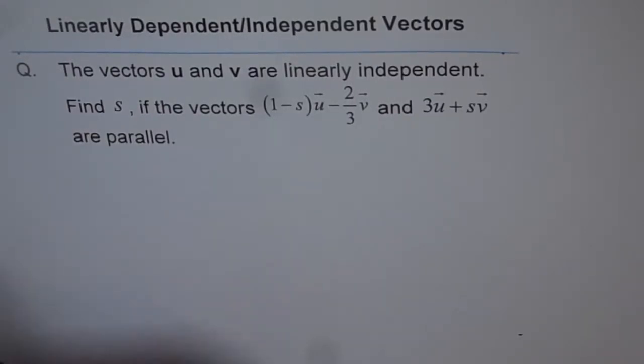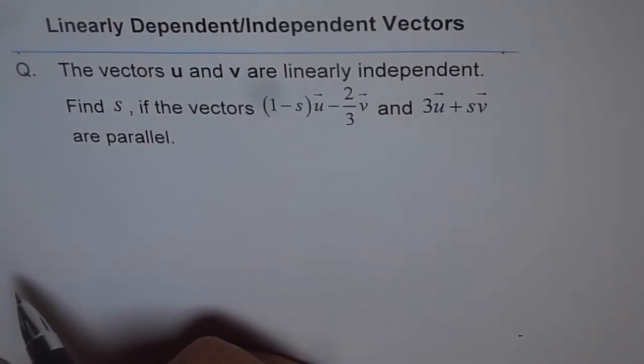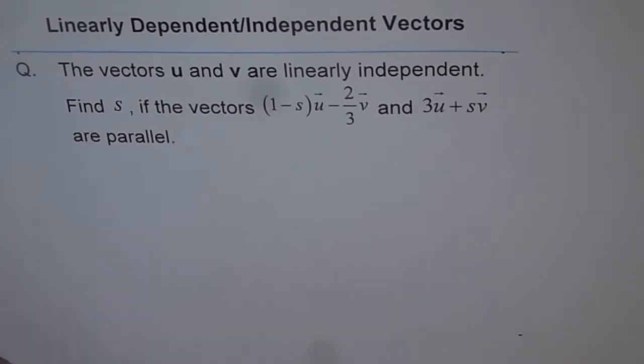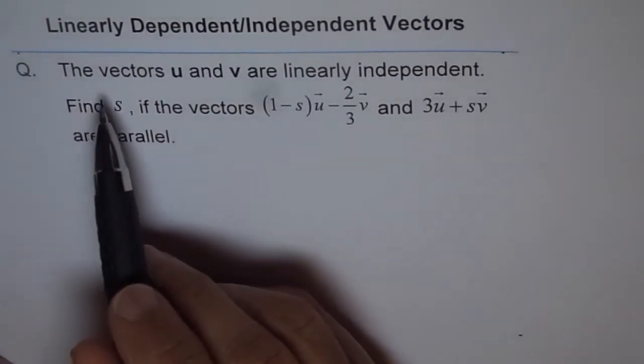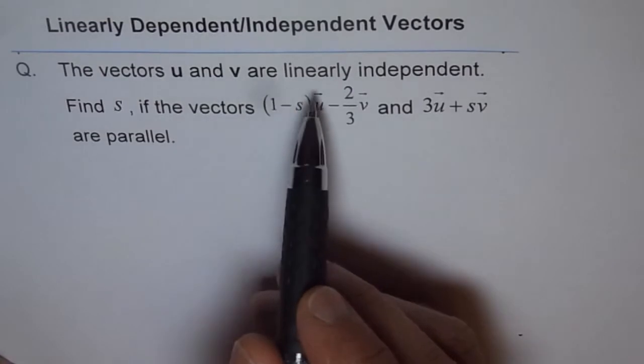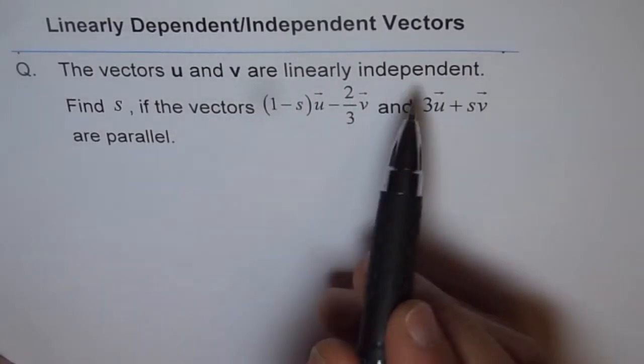Here is an interesting question on linearly dependent, independent vectors. Question is, the vectors u and v are linearly independent, so that is given to us.